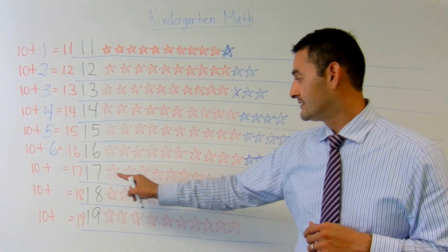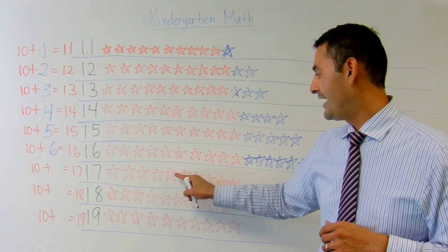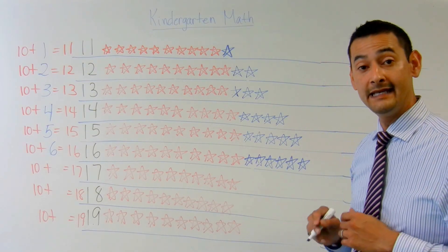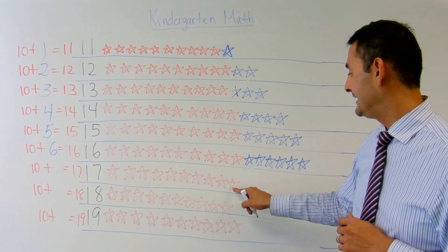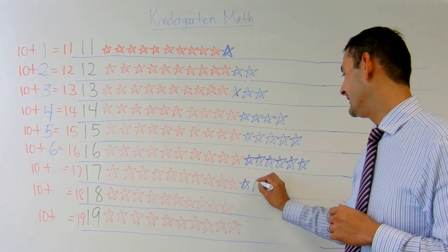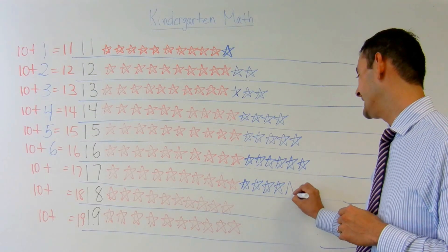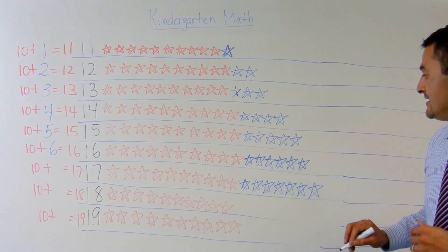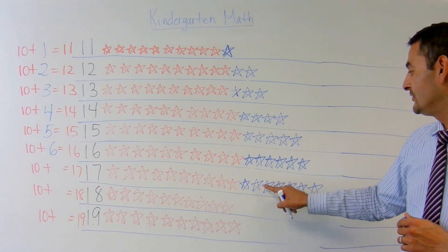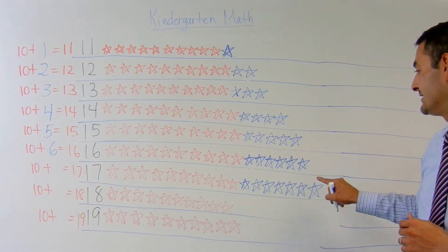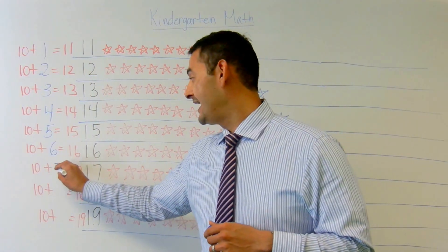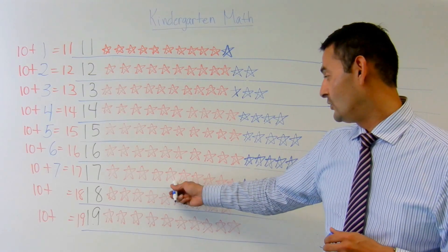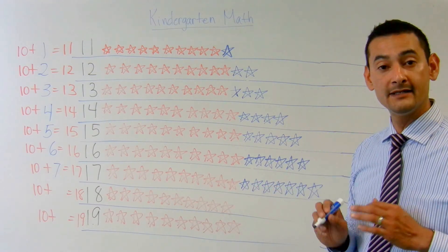Now let's take a look at 17. Here I've got 10 ones: 1, 2, 3, 4, 5, 6, 7, 8, 9, 10 ones plus how many more ones is going to equal 17. Let's see: 10, 11, 12, 13, 14, 15, 16, and 17. So how many ones do I have here? 1, 2, 3, 4, 5, 6, 7. So 10 ones plus 7 more ones equals 17.